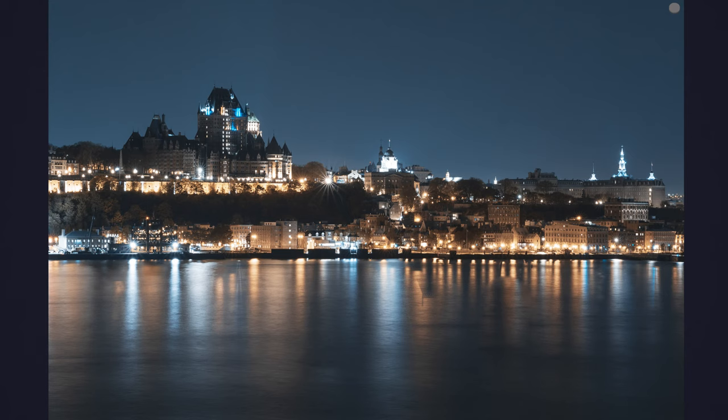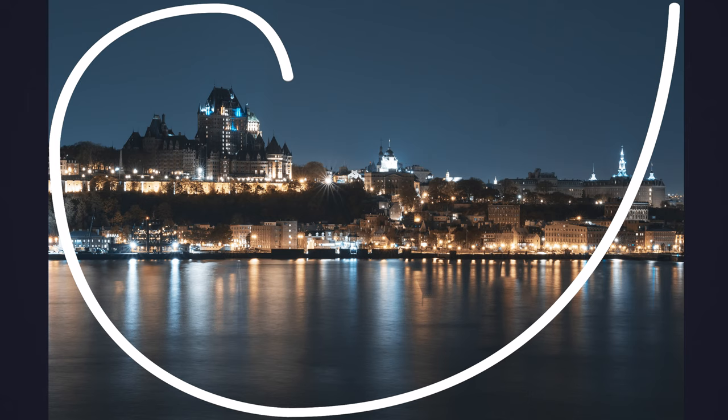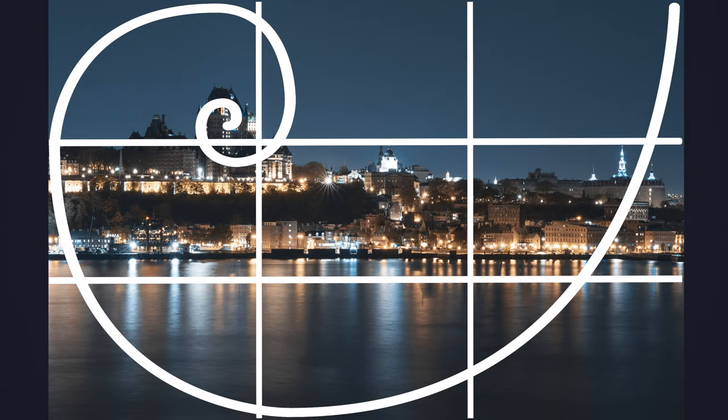The last way to use it would be to literally use it as the Rule of Thirds, but placing the subject in the middle of the spiral. This is why you will sometimes accidentally use the Golden Spiral — because although the spiral and the Rule of Thirds don't match together exactly, both of them are pretty close to each other.